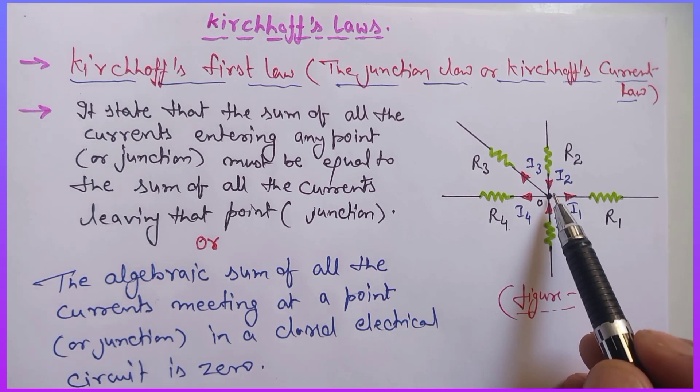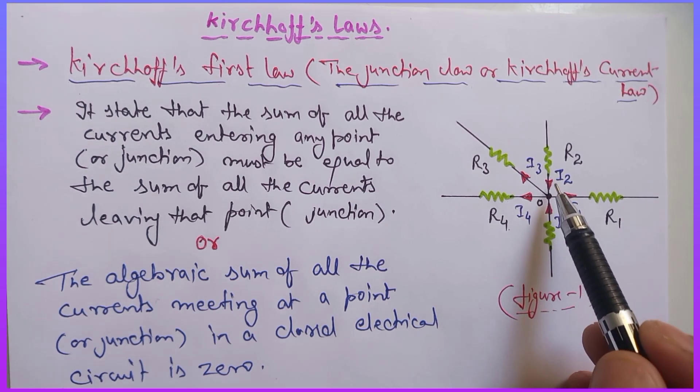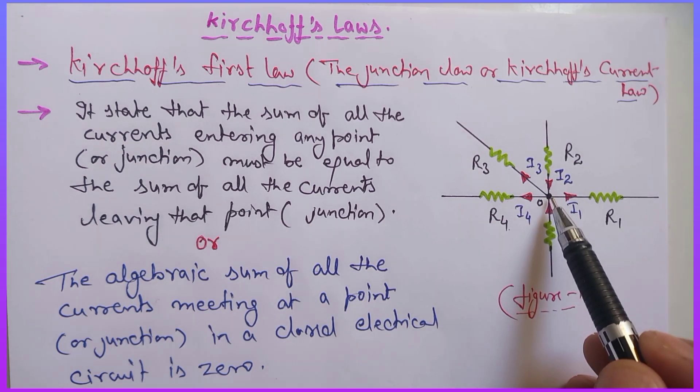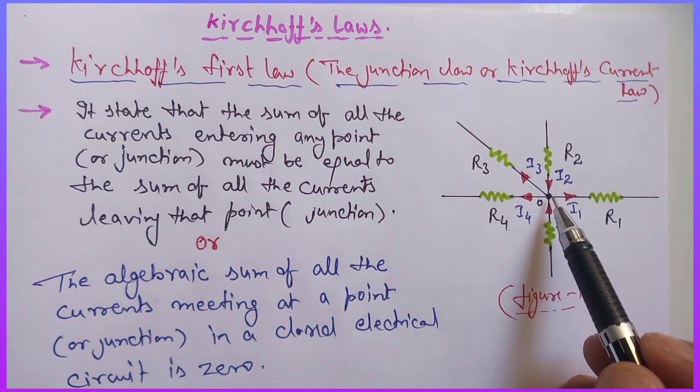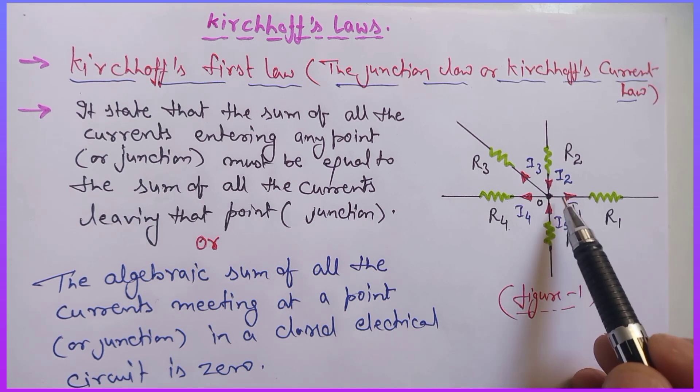According to Kirchhoff's first law, at this junction, if we take the sum of the current entering, it will be equal to the sum of the current leaving this point.